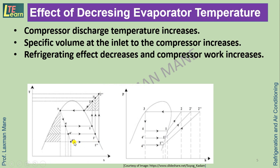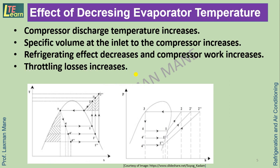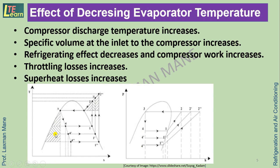The refrigerating effect decreases — the enthalpy difference across the evaporator decreases — while compressor work, shown by the enthalpy difference from point 1 double-dash to 2 double-dash, increases. This ultimately reduces the COP (coefficient of performance). Additionally, throttling losses and superheat losses increase, as shown by the hatching on the PH diagram.